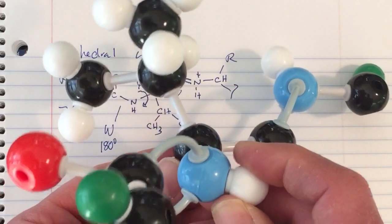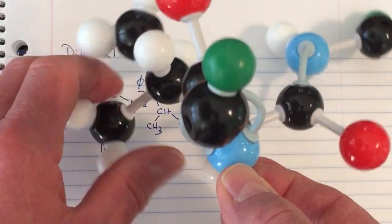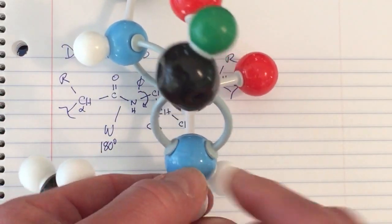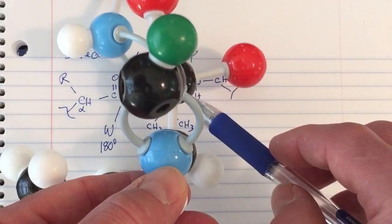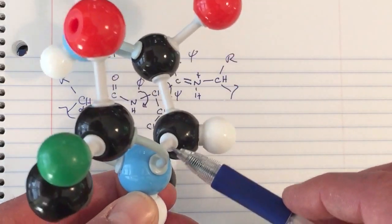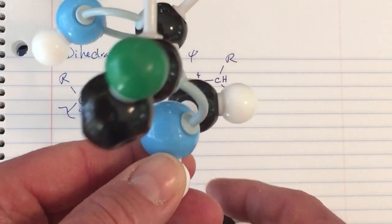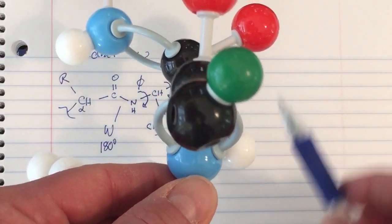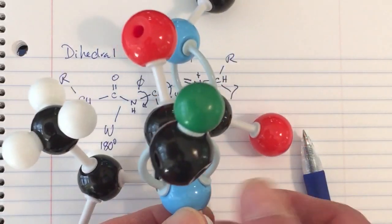If we look down the bond connecting the amide nitrogen and the alpha carbon, we are now examining values of Phi as we rotate. We'll start with the carbonyl, where the angle is defined by the angle subtended between the carbonyl groups ahead of and behind this bond. At values of Phi of zero, we see collision between the carbonyl groups.